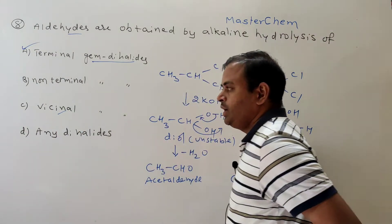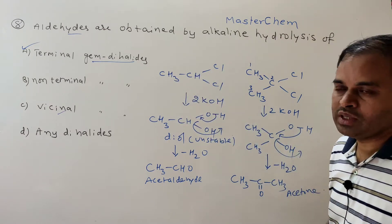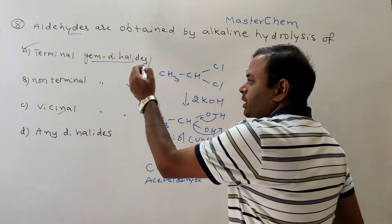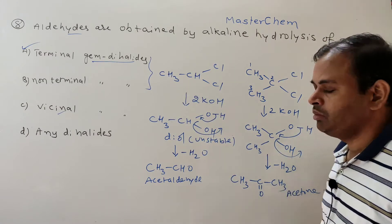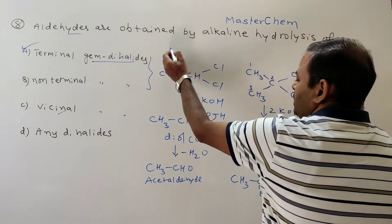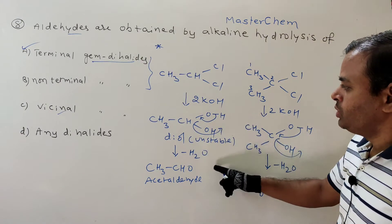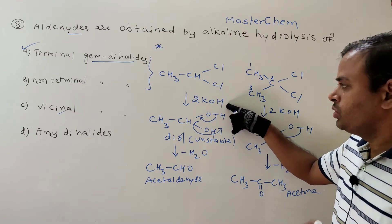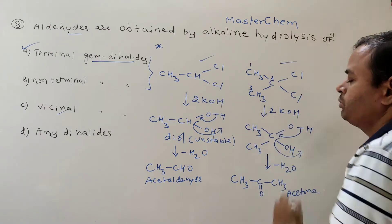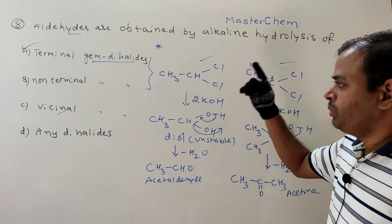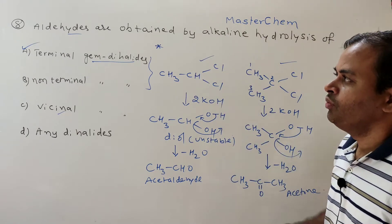Vicinal dihalide means whenever two halogens are present on adjacent carbon atoms. Only gem dihalides will give carbonyl compounds — either aldehyde or ketone. Terminal gem dihalide gives aldehyde and non-terminal gem dihalide gives ketones. However, this is not a very useful method because carbonyl compounds get affected by alkali. Also, gem dihalide compounds are generally prepared from carbonyl compounds themselves, so this is not a convenient method.